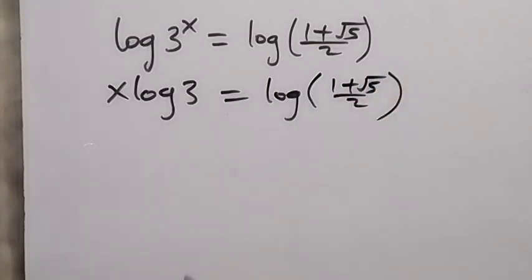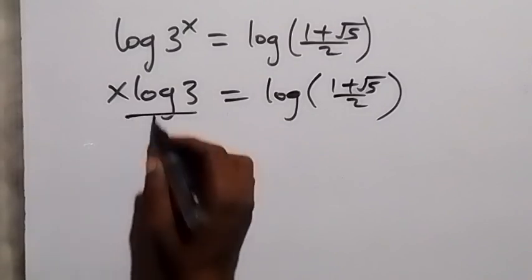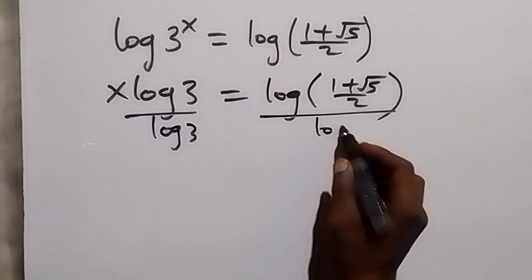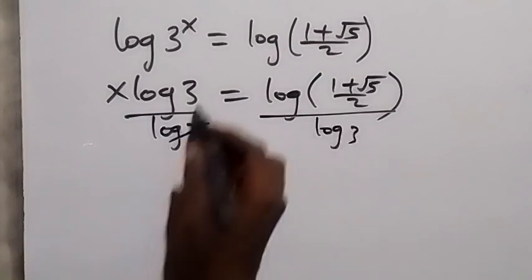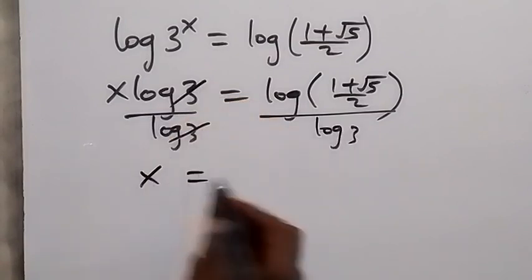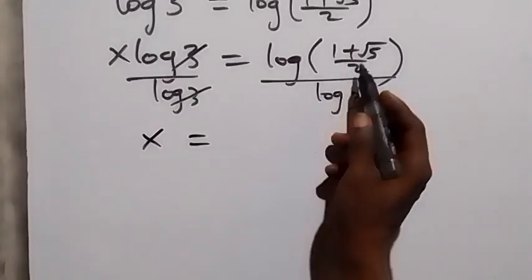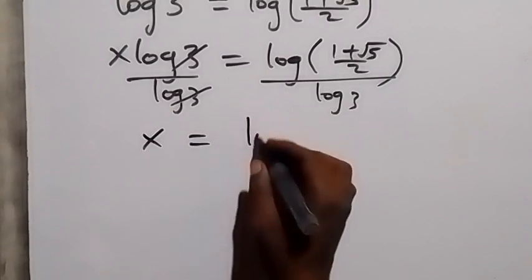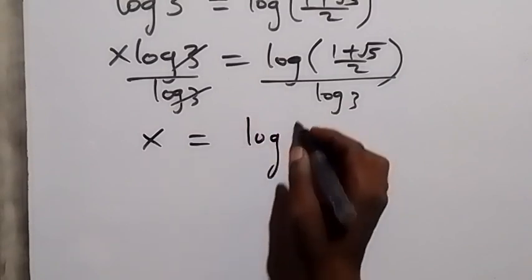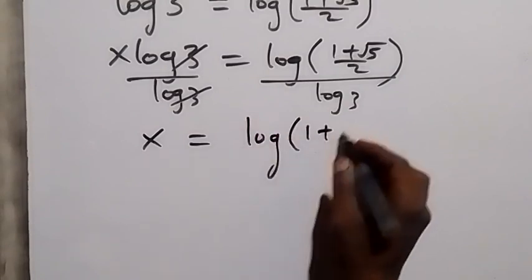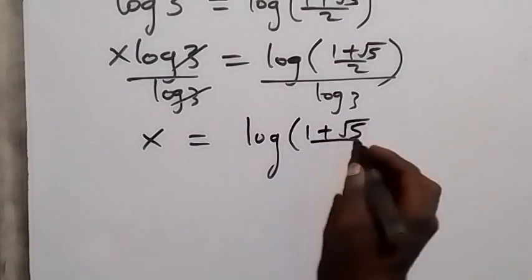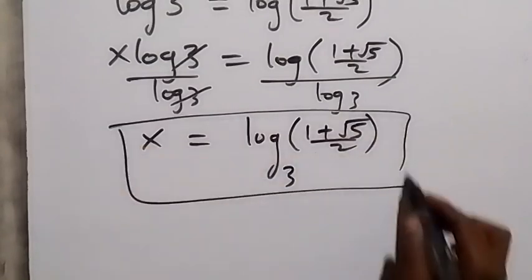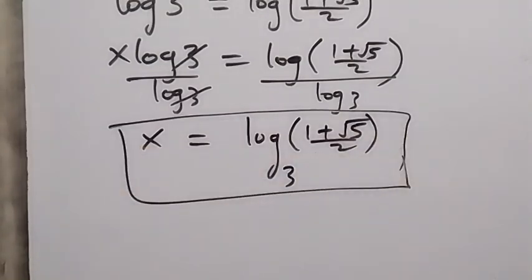We divide both sides by log three. Log three cancels on the left side, and x equals log of one plus root five over two, divided by log three. This can also be written as log base three of the quantity one plus root five over two, using the change of base formula for logarithms.